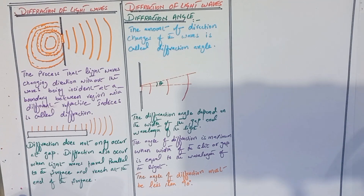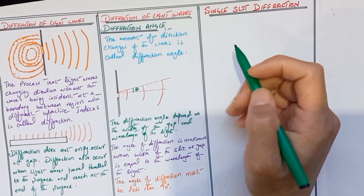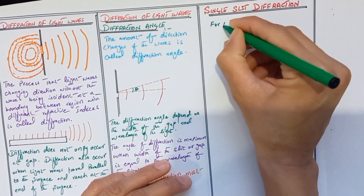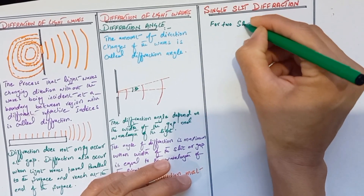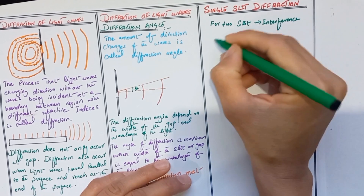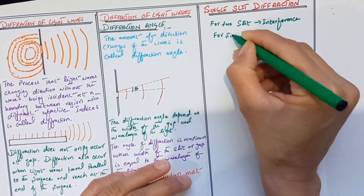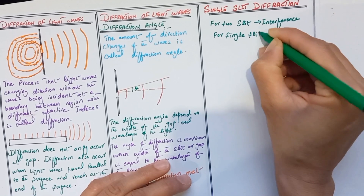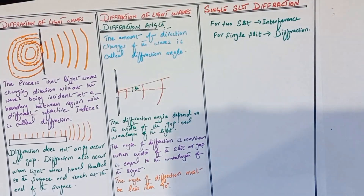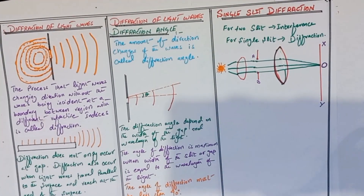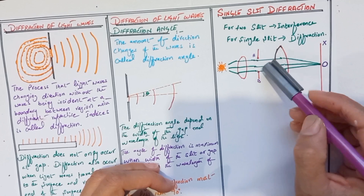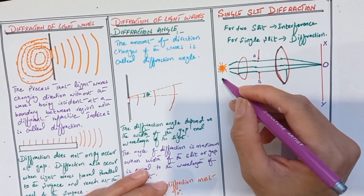Now we discuss the topic of single-slit diffraction. We know that for two slits the phenomenon we study is interference, whereas for a single slit we use the phenomenon of diffraction. For the study of single-slit diffraction, we take a narrow slit of width d.